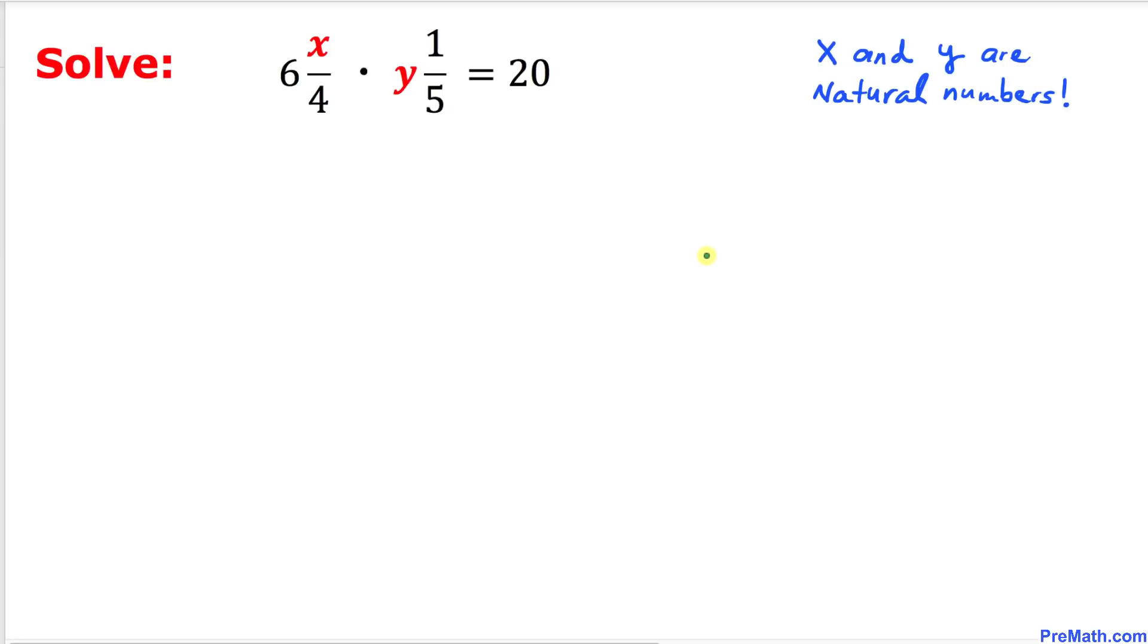Welcome to Pre-Math. In this video tutorial we are going to solve this equation that involves mixed numbers. Let's go ahead and get started. Let's look at this equation. We got this first mixed number is 6 and x divided by 4, times y and 1/5, equals 20.